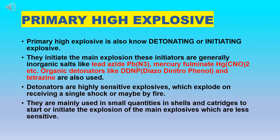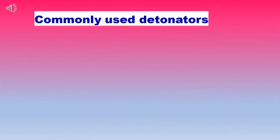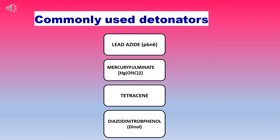Primary high explosives are also known as detonating or initiating explosives. They initiate the main explosion. These initiators are generally organic salts like lead azide, mercury fulminate, etc. Organic detonators like DDNP and tetrazine are also used. Detonators are highly sensitive explosives which explode on receiving a single shock or maybe by fire. They are mainly used in small quantities in shells and cartridges to start or initiate the explosion of the main explosives which are less sensitive. Commonly used detonators are lead azide, mercury fulminate, tetrazine and dinol.